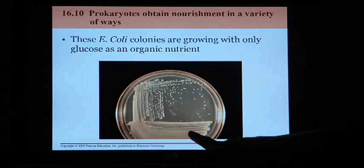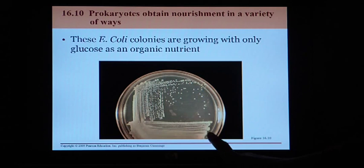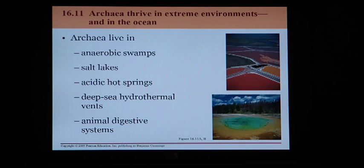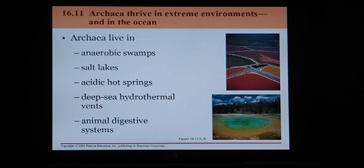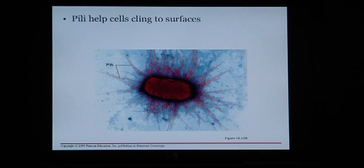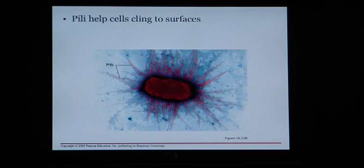Think about how many bacteria must be present for you to see them without a microscope — that's a ridiculous amount. Archaea live in places like anaerobic swamps, salt lakes, hot springs, deep-sea hydrothermal vents with insanely hot temperatures, and in animal digestive systems with no oxygen. Bacteria also have hair-like projections called pili that are sticky and help bacteria attach to surfaces — whether it's your skin, the inside of your digestive tract, or a door handle.